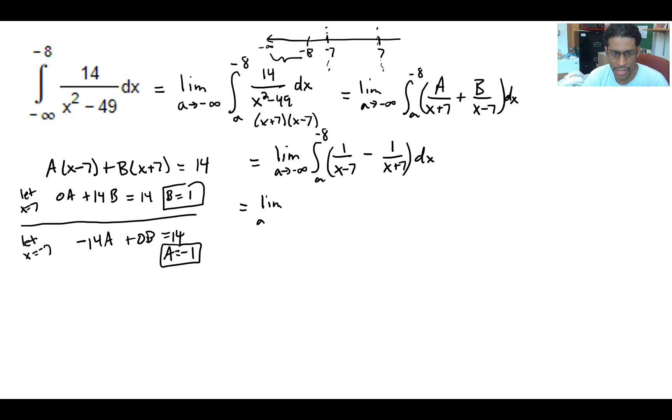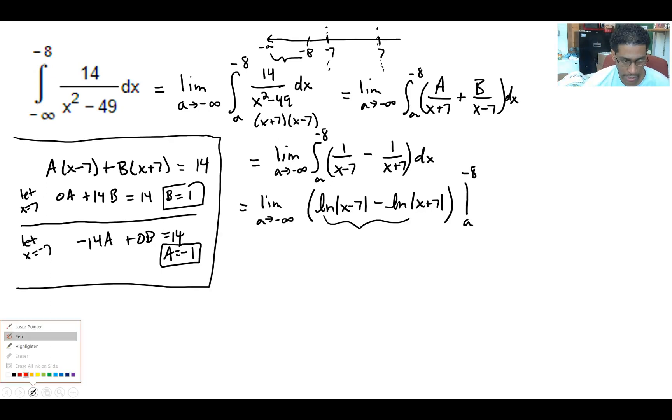Now we have the limit as a goes to minus infinity, and the antiderivative is going to be the natural log of x minus 7 minus the natural log of x plus 7. We're going to plug in the a, we're going to plug in the negative 8. What we'll do is combine these two into one single log, the natural log of x minus 7 on top of x plus 7, using the property of logs. And now we'll go plug in.